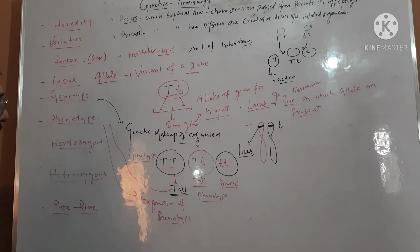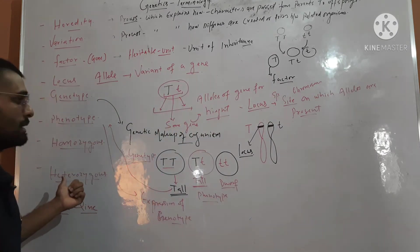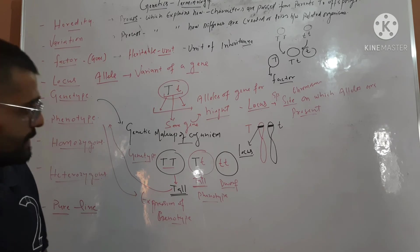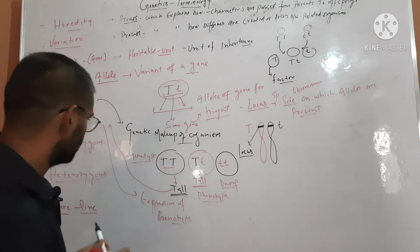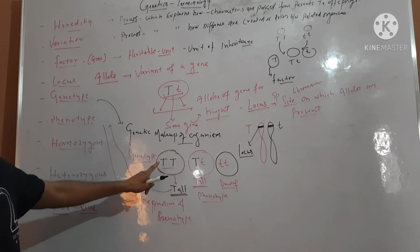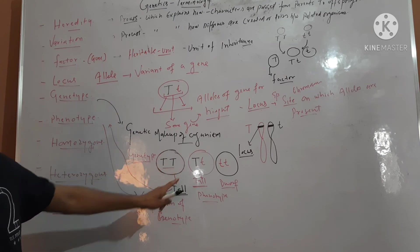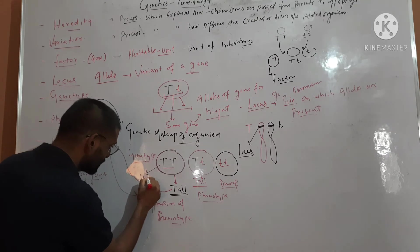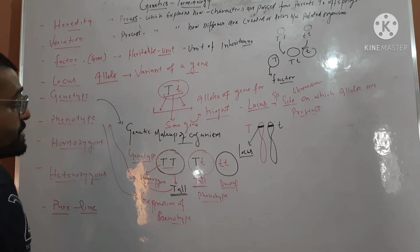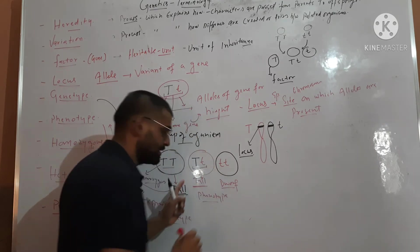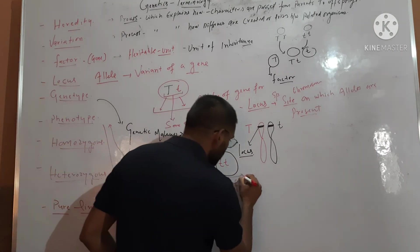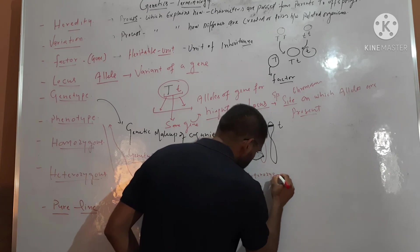Next is homozygous. If similar type of alleles are present in an organism for the same gene, then this organism will be called homozygous. Here in this plant, for the gene for height, the alleles are similar, so this will be called homozygous. If different alleles are present for the same gene — here capital T and small t, this is the allele for tallness and this is the allele for dwarfness — so it will be called heterozygous.